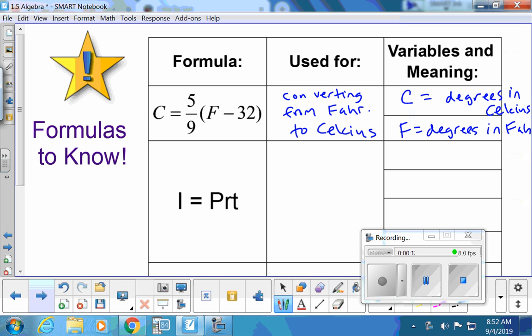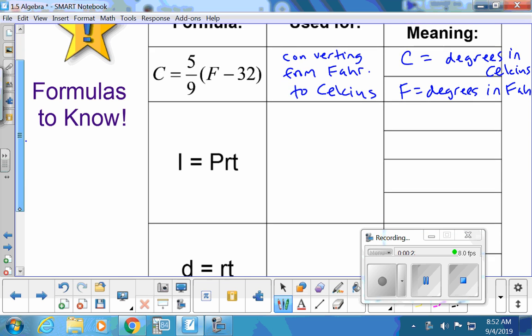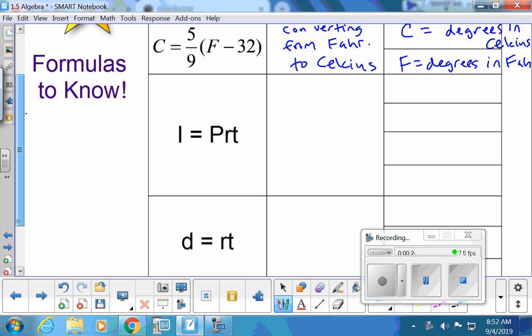So we've already jotted down our Celsius to Fahrenheit formula. I even put it on the formula board. But C stands for Celsius, F stands for Fahrenheit. Here's our next formula we're going to jot down. Write this one down.